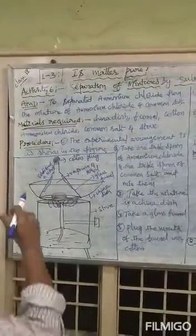Heat the dish on the stove and observe the walls of the funnel. Observation: Initially, we find vapors of Ammonium Chloride and then solidified Ammonium Chloride on the walls of the funnel — specifically on the sides of the cooler parts of the funnel inside it, as shown in the diagram.